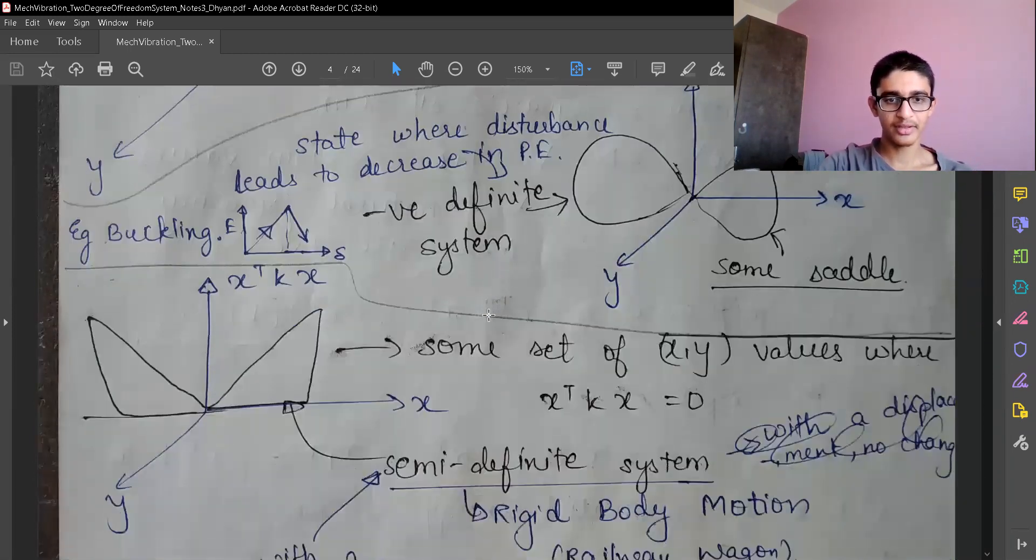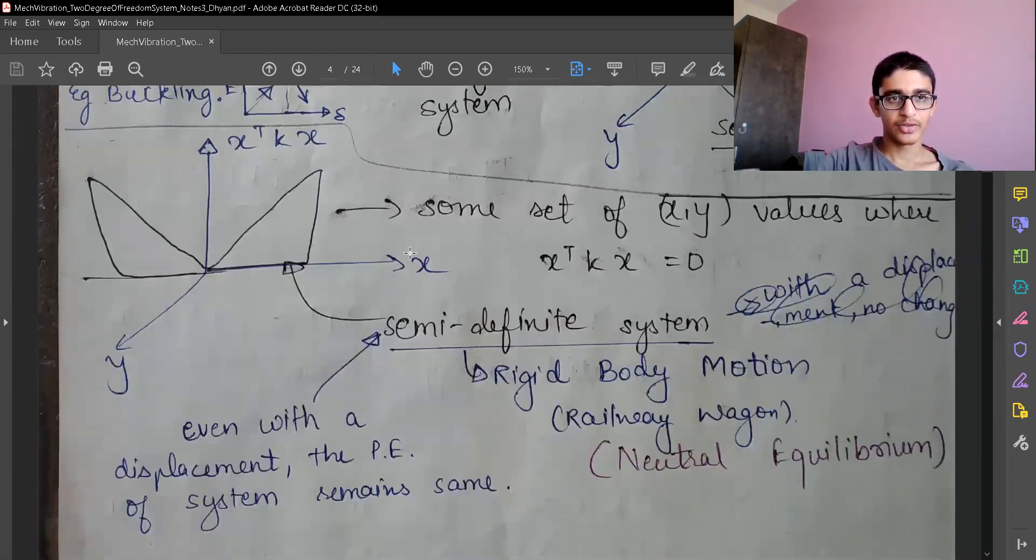Now we come to the semi-definite system. It can be represented by some complex topological surface which I cannot draw easily on 2D plane. You can understand it's some set of X, Y values where X transpose KX is zero. There is some surface, some line, which is exactly placed on that X, Y plane.